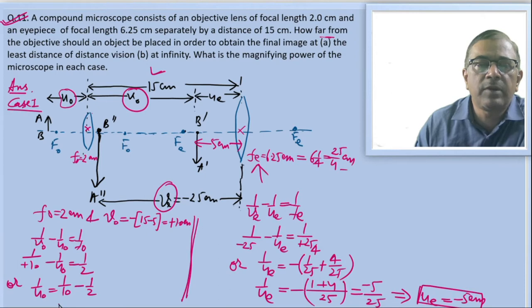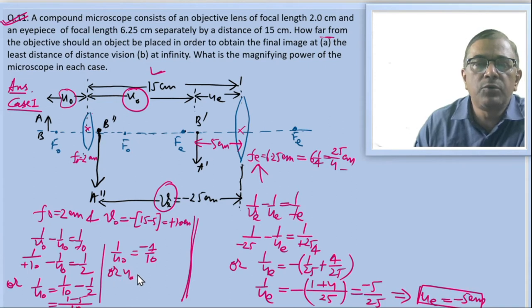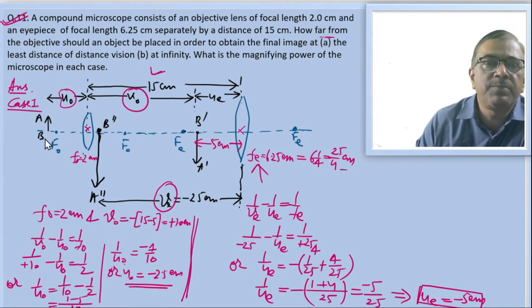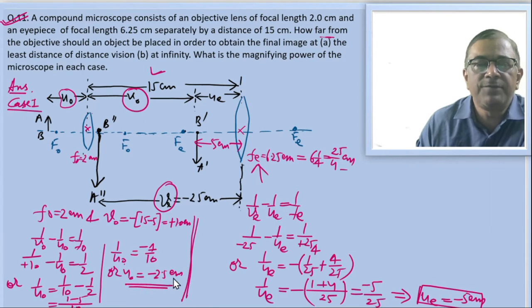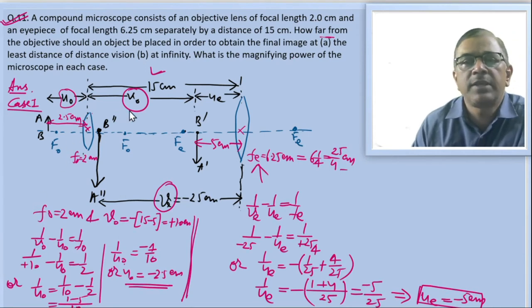Taking 10 as the LCM, this gives 1 by u_o equals 1 minus 5 over 10, which implies 1 by u_o equals minus 4 by 10, so u_o equals minus 2.5 centimeter. This suggests that the object should be placed at a distance of 2.5 centimeter before the objective lens. So this separation is 2.5 centimeter.